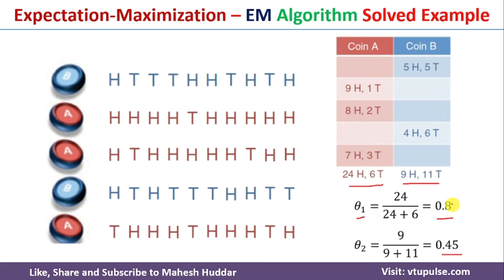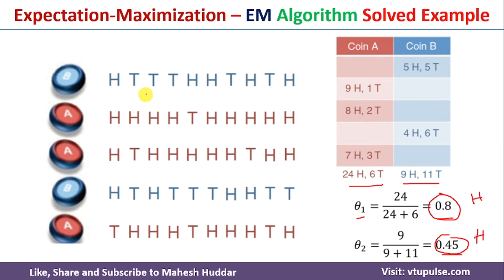The value 0.8 means that whenever you toss coin A, there is an 80% chance you will get heads, and the remaining 20% of the time you will get tails. The value 0.45 means that whenever you toss coin B, there is a 45% chance of getting heads, and the remaining 55% of the time you will get tails. In this case, we know which coin was chosen for each experiment, so we can easily calculate theta 1 and theta 2.